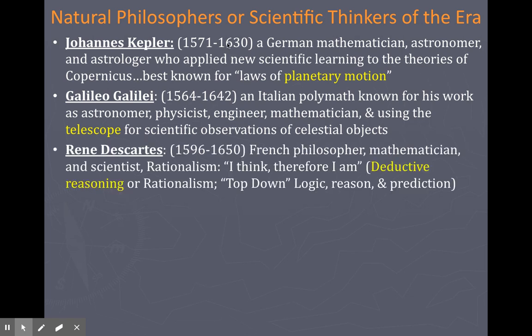You can see a lot of these guys overlapping each other — growing up at the same time, bouncing ideas off each other, and getting information via the printing press. If somebody discovered something, like Kepler in Germany and Galileo in Italy, different people in different parts of Europe were spreading these ideas around because of how fast things could be distributed thanks to the printing press.